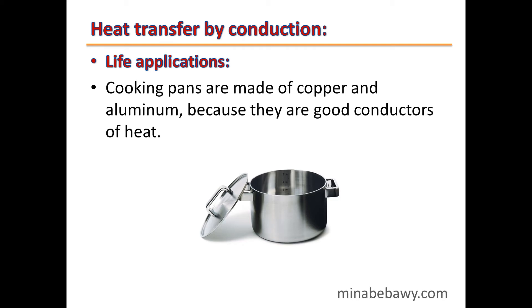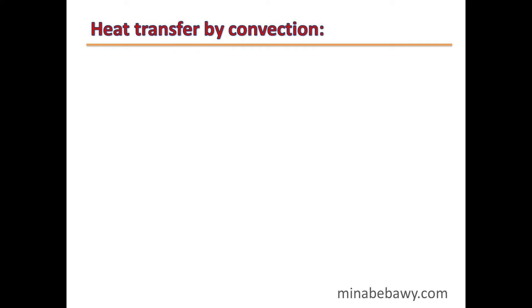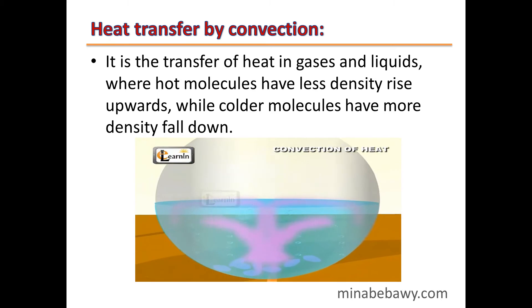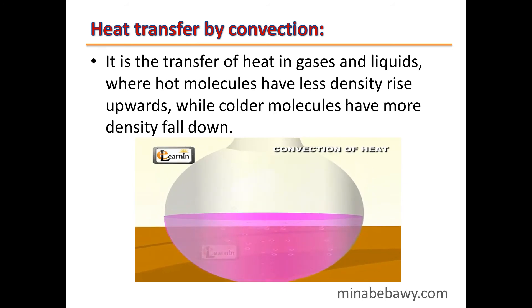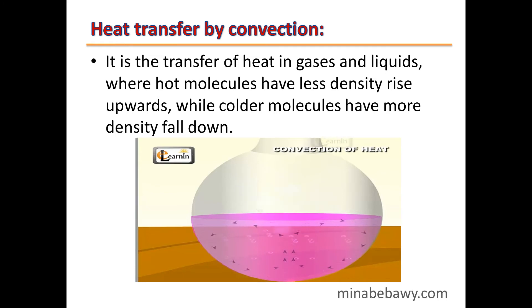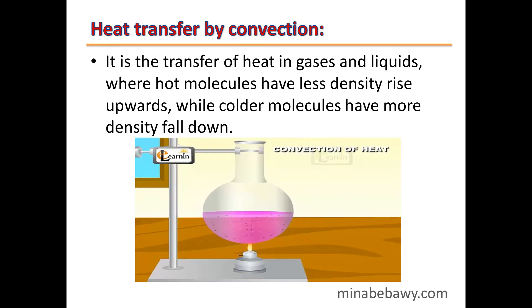Heat transfer by convection: convection is the transfer of heat in gases and liquids, where hot molecules have less density and rise upwards, while colder molecules have more density and fall down. As seen in this video, we added pieces of potassium permanganate and observed that the color moves from the bottom upward then falls down in a circle.